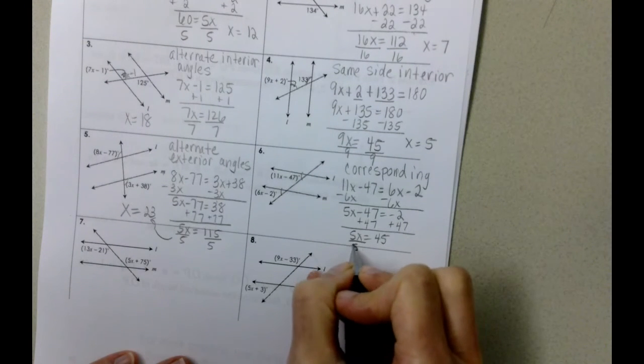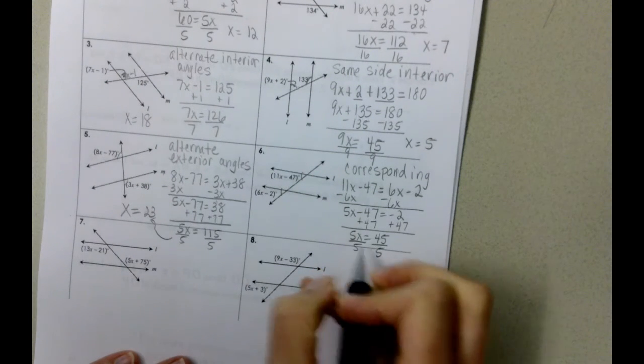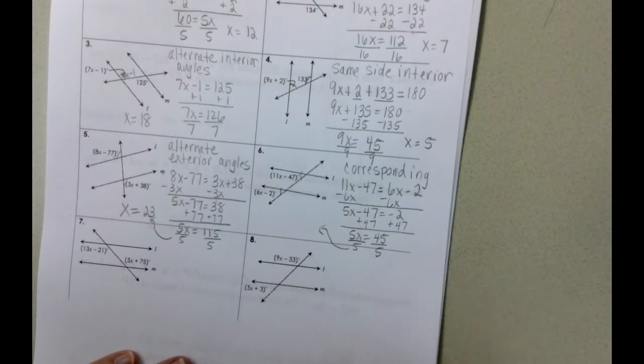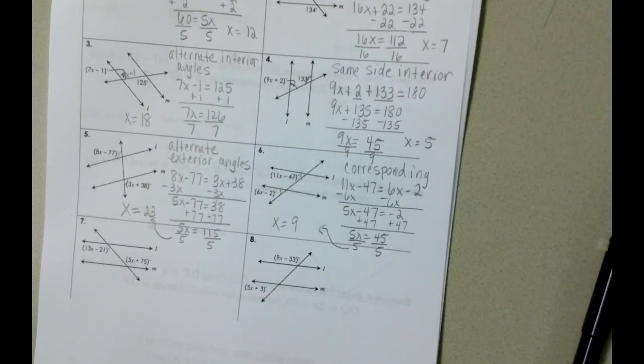And divide both sides by 5, and we end up with X equals 9.